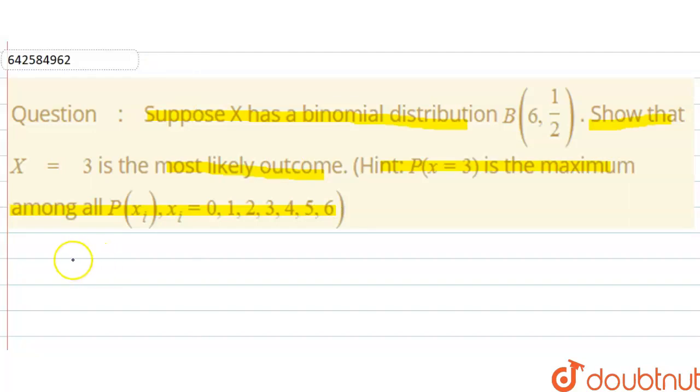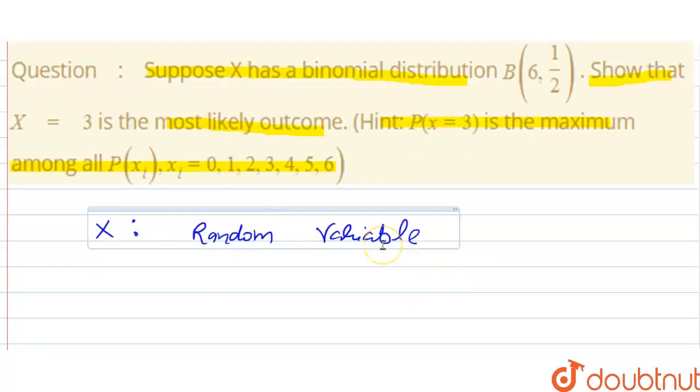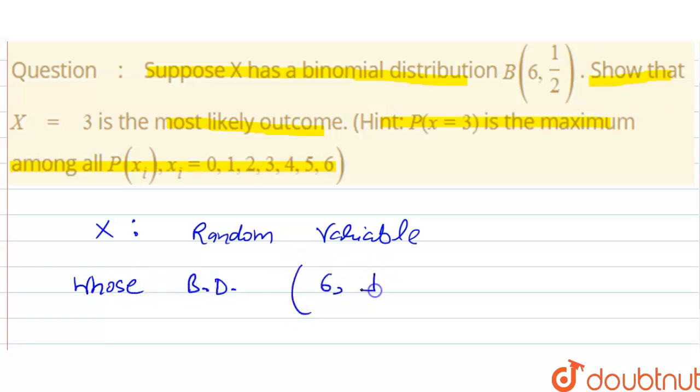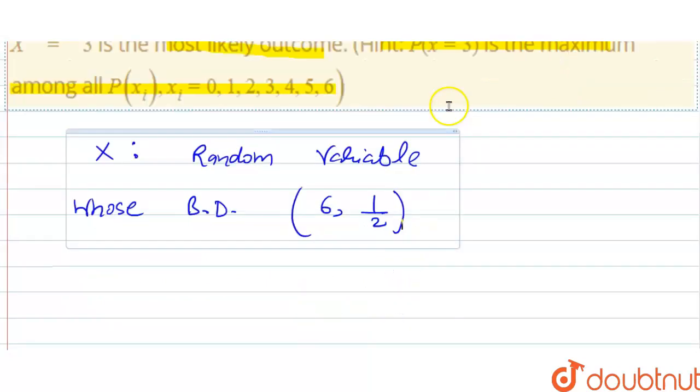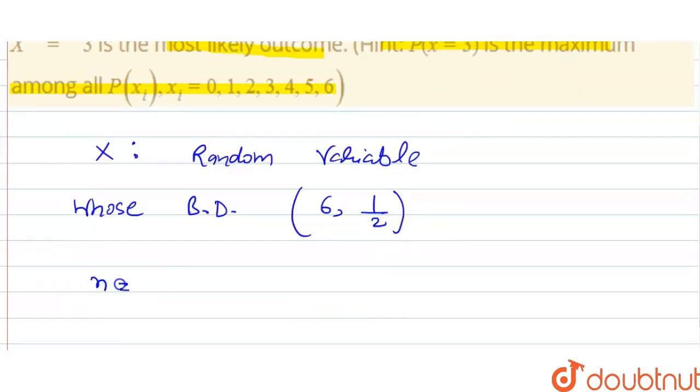Now we have to define X as a random variable whose binomial distribution will be B(6, 1/2). So therefore,